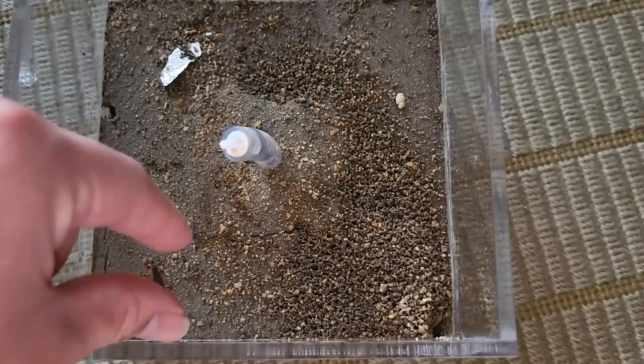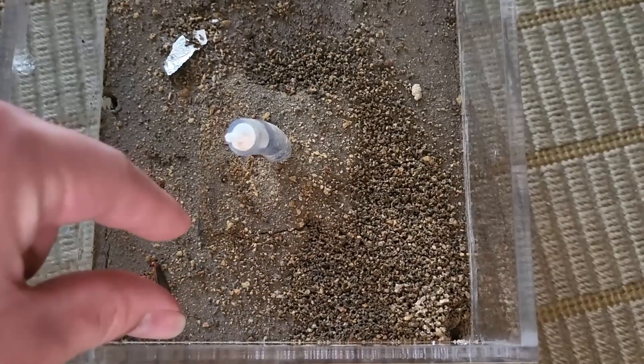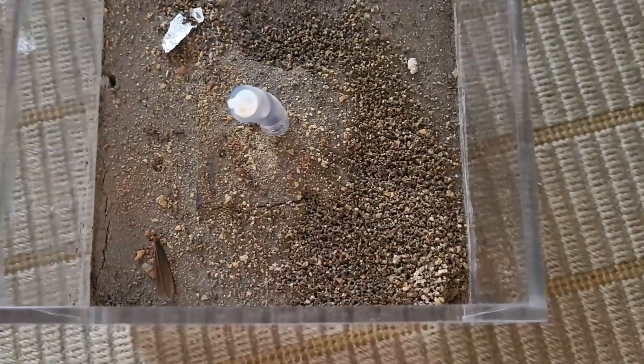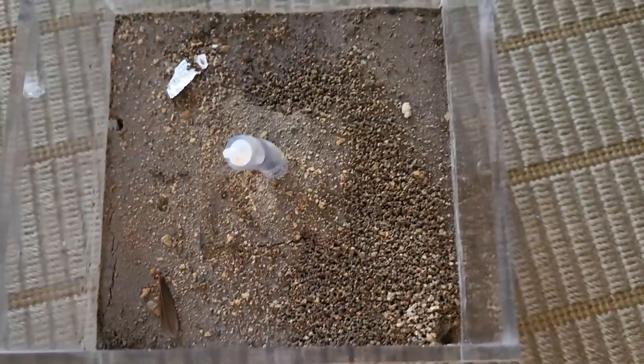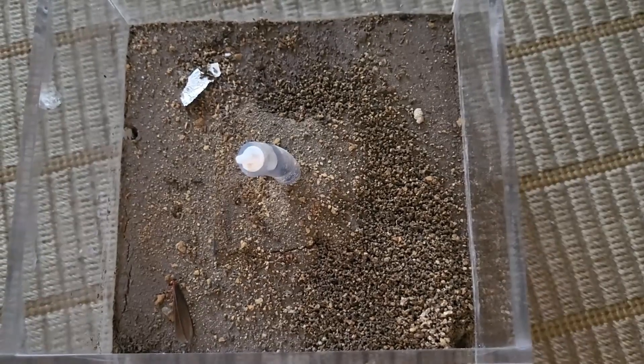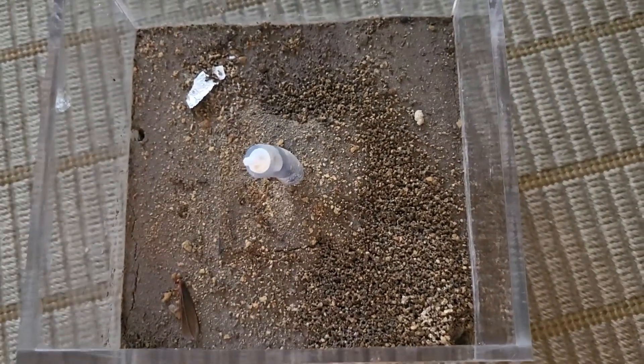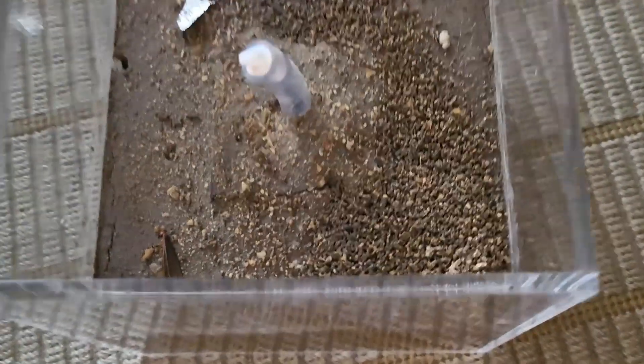Usually for dirt boxes you want the colony to have a smaller width so that you can see the ants, but I wanted to see more of the natural digging habits, which I can't really see, but you get the point.